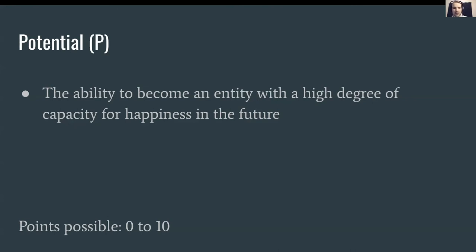Potential is the ability to become an entity with a high degree of capacity for happiness in the future. This is important because without this criterion there'd be little ground for valuing the life of a newborn baby, who doesn't yet have the memory capacity or self-awareness of an adult. Because of potential, they still earn points in this category. Similarly, an adult human in a permanent coma may have a lower score for potential. The total here is 10 points.